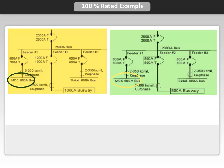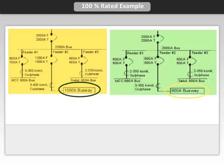Feeder number 2 had a load of 800 amps. We can now use an 800 amp 100% rated breaker, but once again we now use an 800 amp busway instead of the 1,000 amp busway. Feeder number 3 carries 600 amps total, so using a conventional sizing method, there is no need to use a 100% rated breaker here.